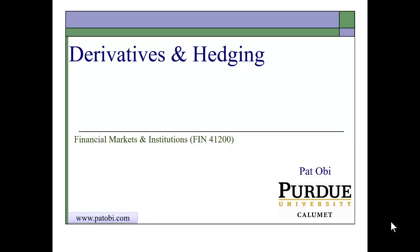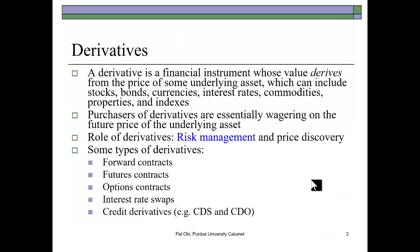This presentation on financial markets and institutions provides a basic description of derivatives and hedging. It also shows some examples of trades and transactions. A derivative is a financial contract that derives its value from the price of some underlying asset.